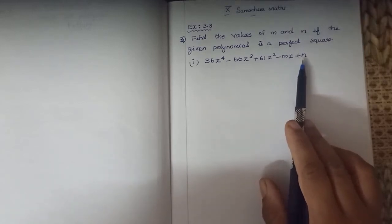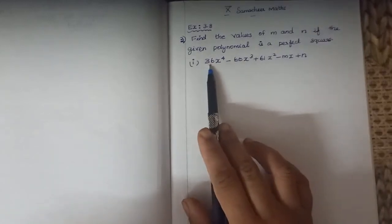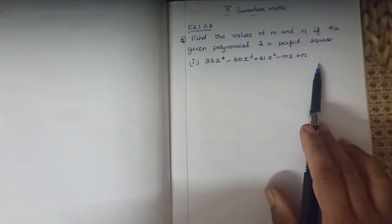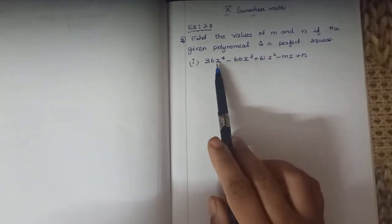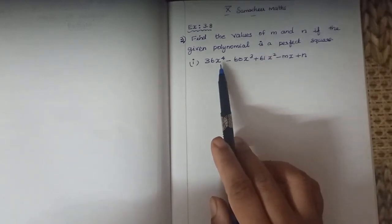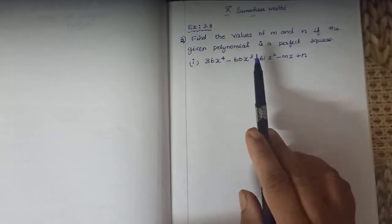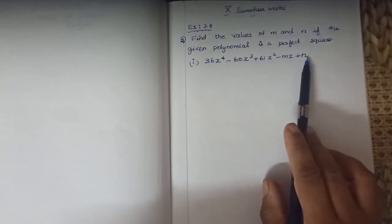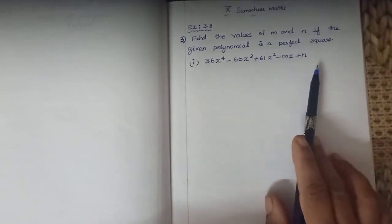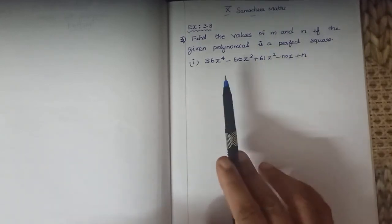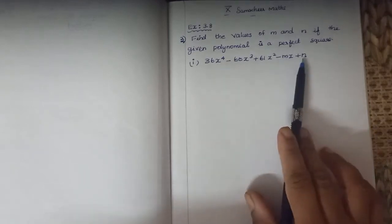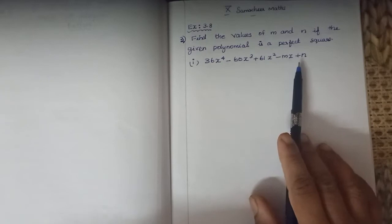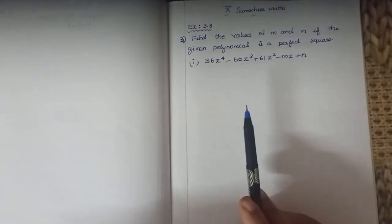First, check whether the polynomial is in standard form. Standard form means the degrees are arranged in order: x to the power 4, then 3, then x to the power 2, then x to the power 1, then x to the power 0. You have to arrange it in either ascending or descending order. Then only we can start.